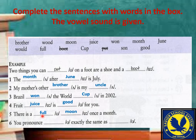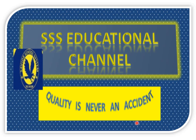You pronounce 'wood' exactly the same way as 'would' — the spelling is different: w-o-d versus w-o-u-l-d, but they are pronounced the same way. I hope you would be able to understand these differences, and next time you will pronounce these words correctly.